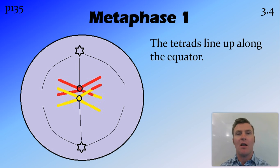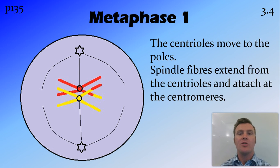The tetrads line up along the equator, and here we've only got 1 tetrad made up of those 4 chromosomes. But you can imagine that in a human cell, there would be 23 of these tetrads all lined up across the equator. During this phase, the centrioles move to the poles and start to produce spindle fibres that extend out and join onto the chromosomes at the centromere.